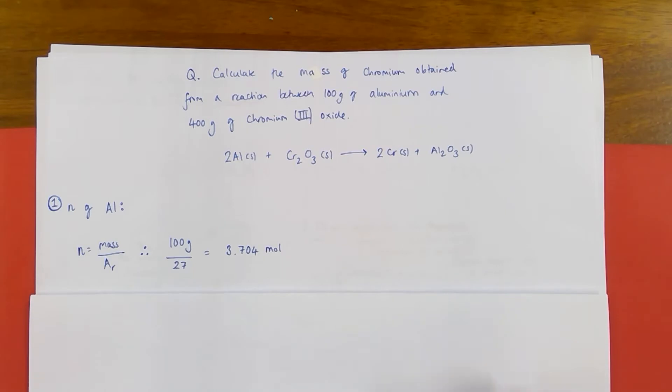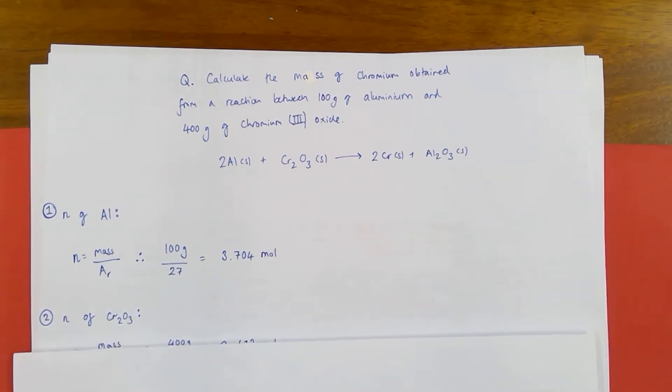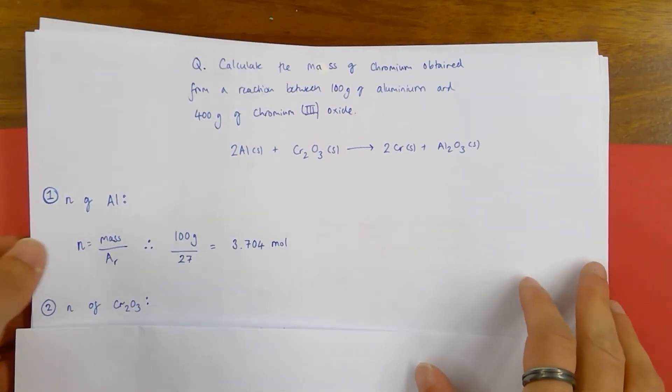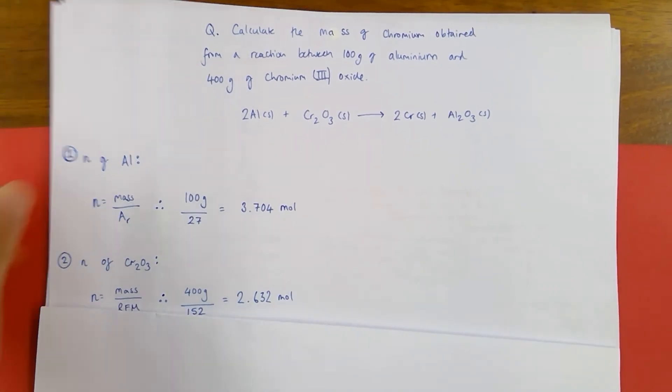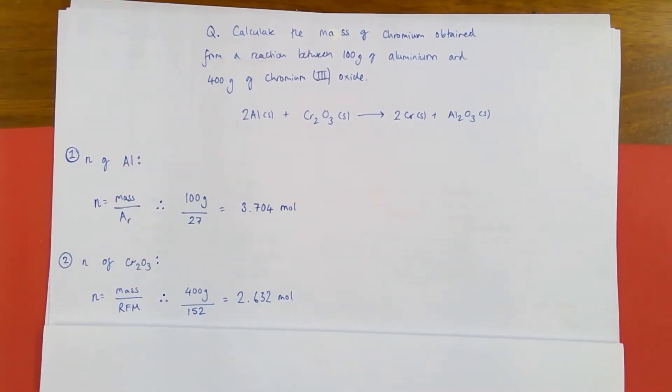Next I'm going to work out the moles of the chromium oxide. That is n of Cr2O3, moles equals mass divided by RFM this time because we're dealing with a compound not an element. So 400 grams divided by 152. 152 was calculated by timesing the relative mass of chromium by 2, that's 52 times 2 plus 3 times the oxygen's relative atomic mass which is 16. So 3 times 16 gives me 152. So 400 grams divided by 152 gives me 2.632 moles of chromium.